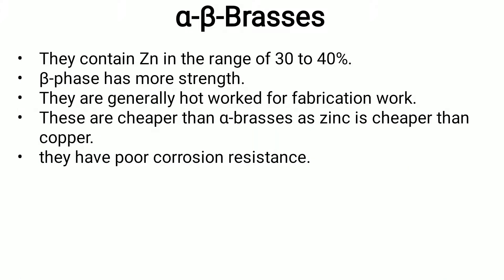Alpha-beta brasses contain zinc in the range of 30 to 40%. The beta phase provides more strength, and these brasses are generally hot-worked for fabrication. They are cheaper than alpha brasses since zinc is cheaper than copper, but alpha-beta brasses have poorer corrosion resistance compared to alpha brasses.